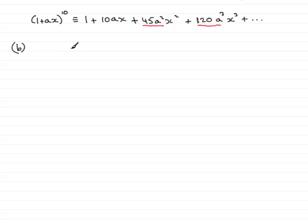So first of all, to find a, we need to set up an equation relating these two coefficients together. So we have 120a cubed is twice the coefficient of the x squared term, so that's two lots of 45a squared. That means therefore we have 120a cubed equals 90a squared.